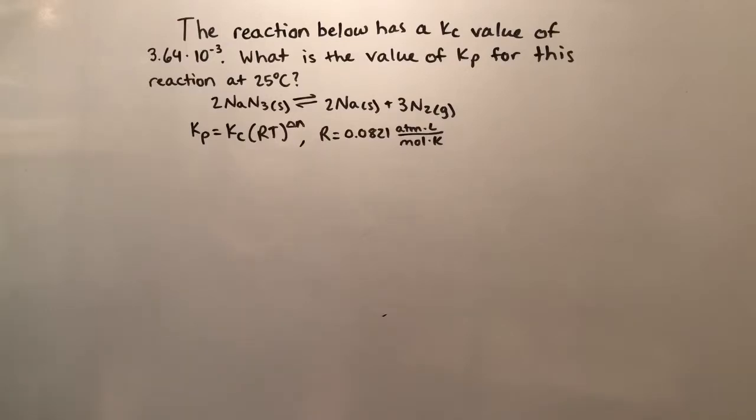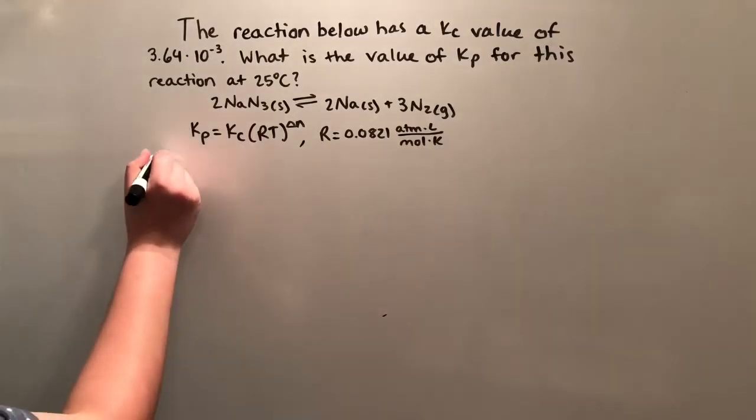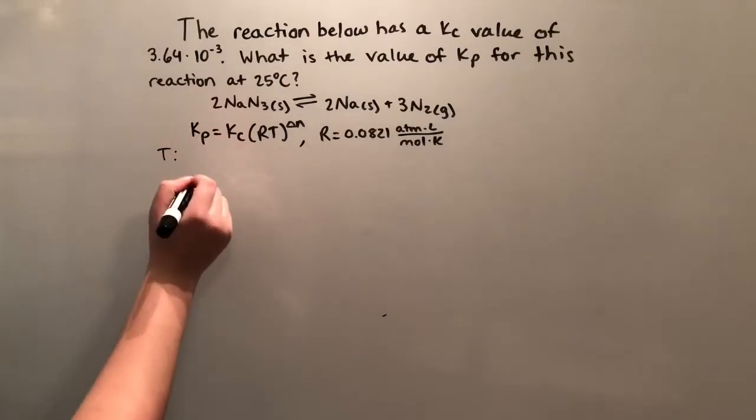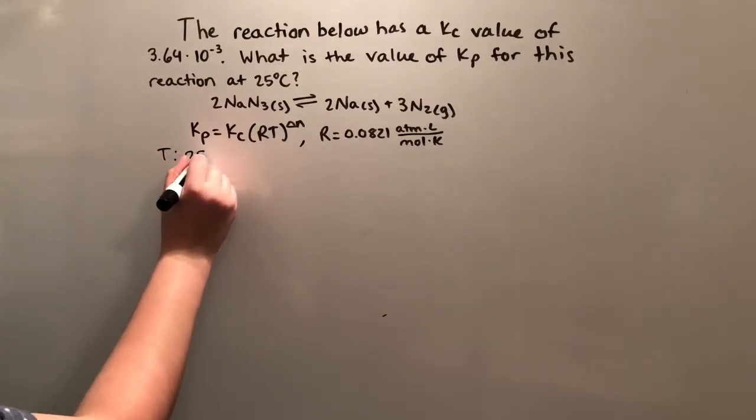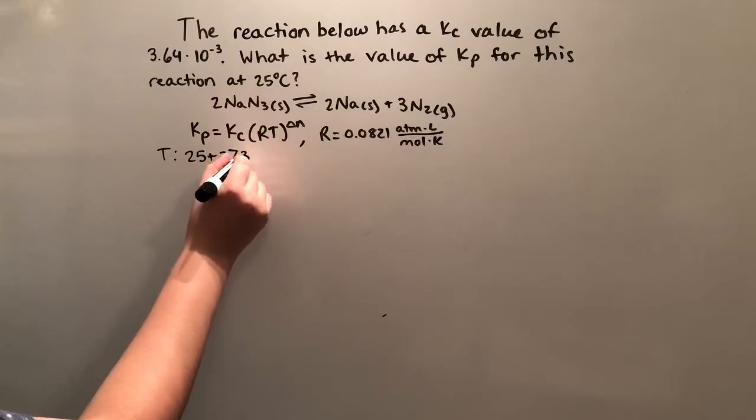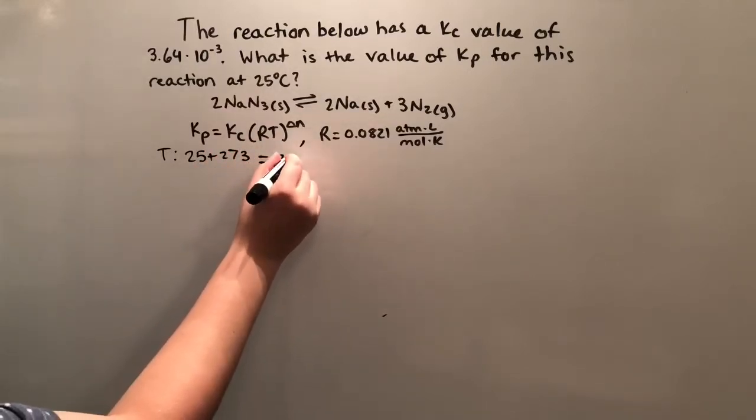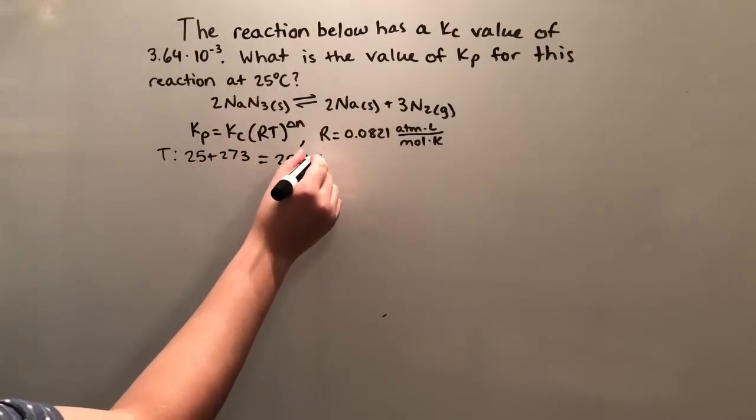Now our temperature is given, that's 25 degrees Celsius, but we're going to have to convert it to Kelvin to make sure that our units cancel out properly. So to convert to Kelvin, we're going to need to take the 25 degrees Celsius and add 273 to it to get 298 Kelvin.